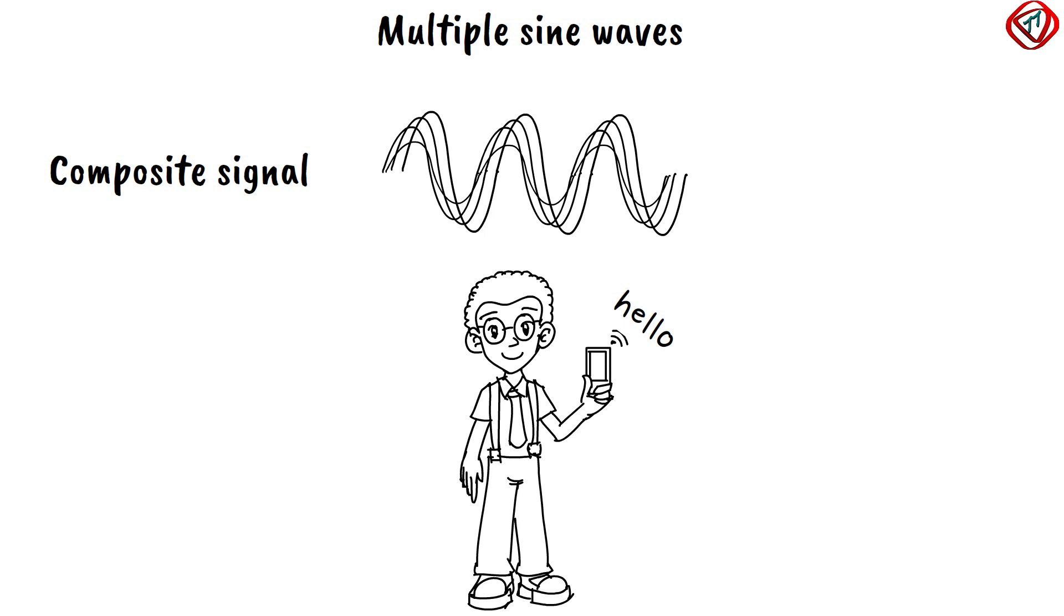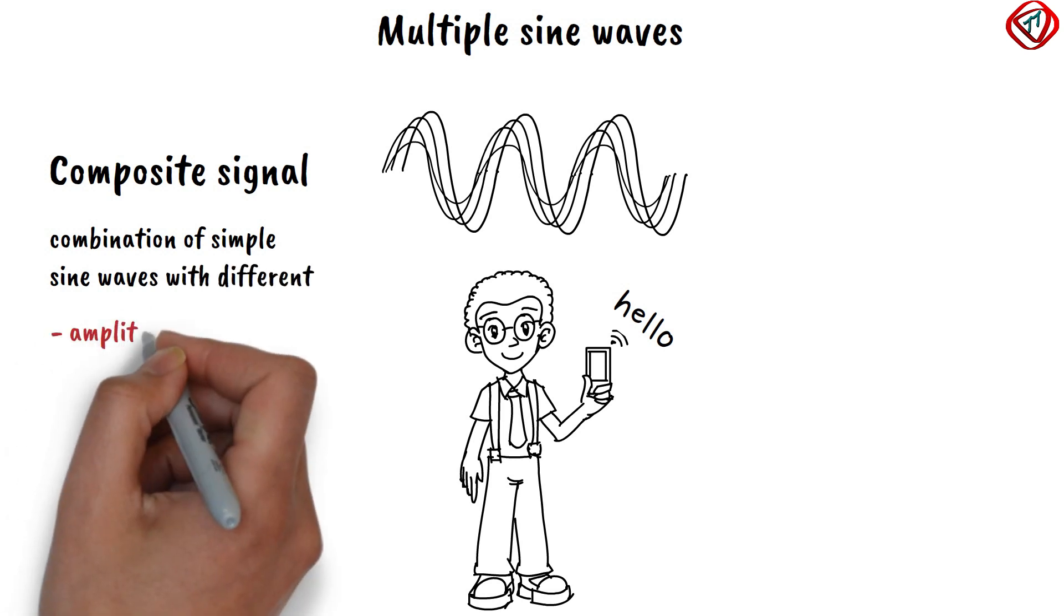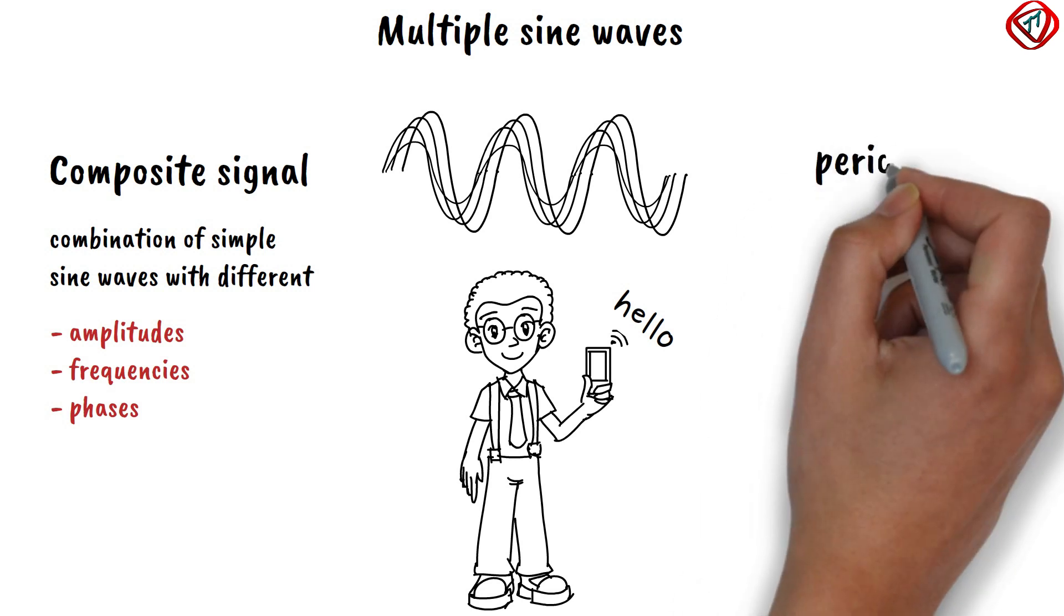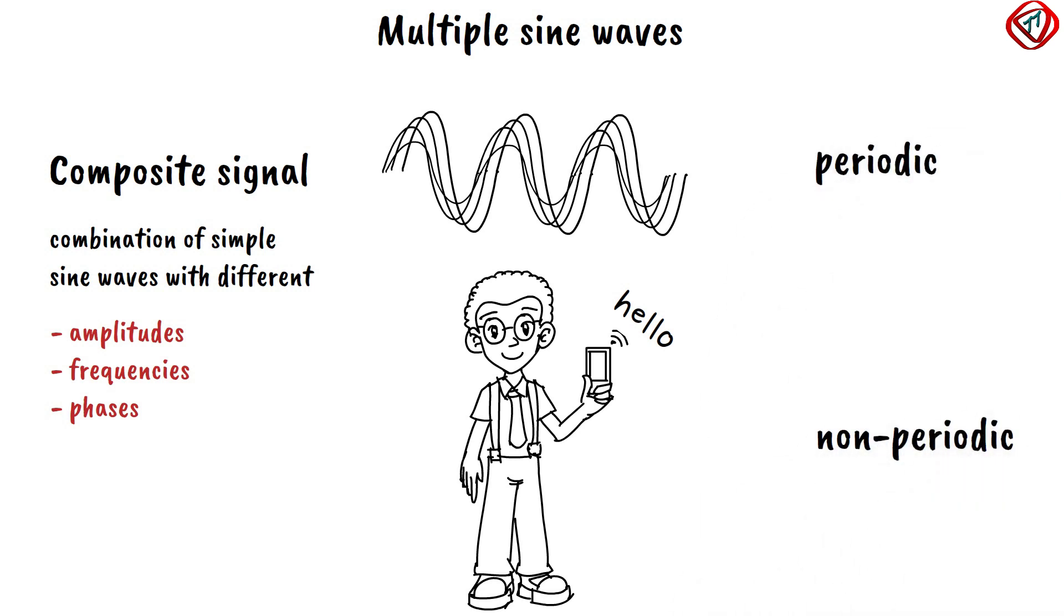As per Fourier analysis, any composite signal is a combination of simple sine waves with different amplitudes, frequencies, and phases. A composite signal can be periodic or non-periodic.